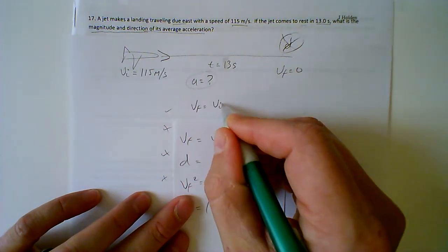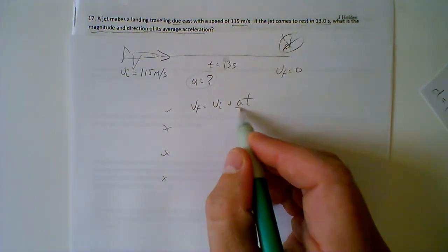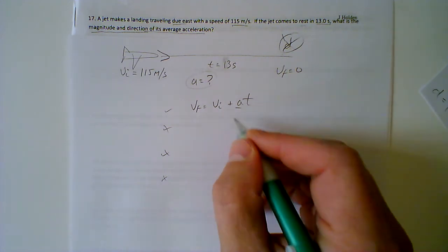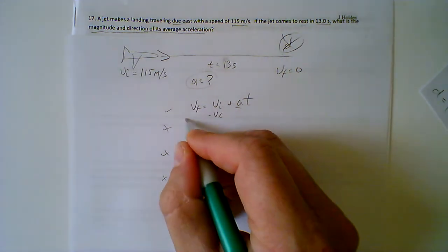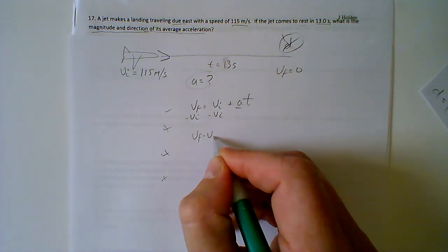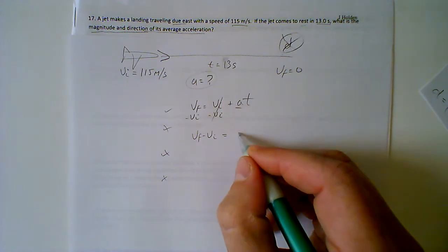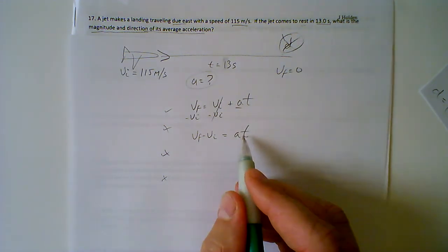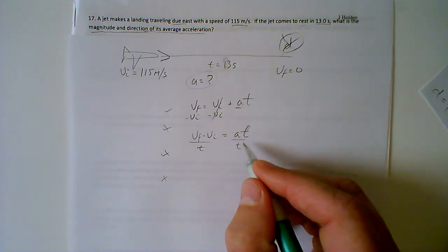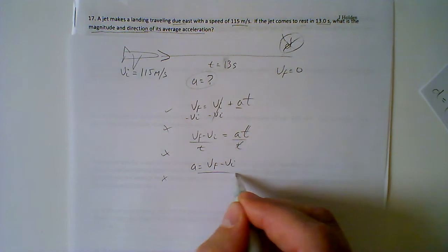VF equals VI plus AT. We start off this problem rearranging for A. We subtract — we've got to get rid of what's added before we can break these two apart. Minus VI, minus VI. So we get VF minus VI; these two cancel out. Equals AT. Now we want to get rid of T so we can be left alone with A. So A equals VF minus VI over T.